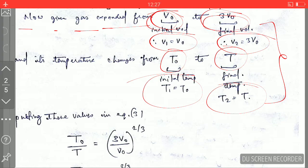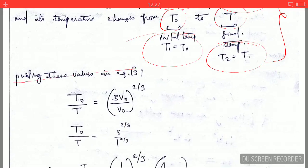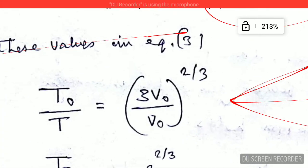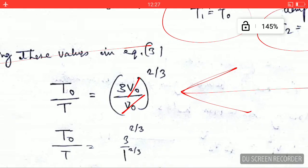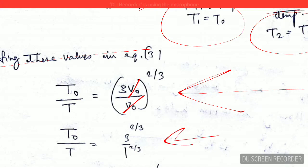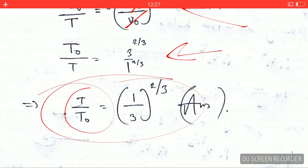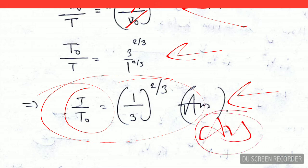After substituting the values, V₀ cancels from both sides and the equation simplifies. Rearranging gives us the ratio T over T₀, which is our final answer. Thanks for watching — if you liked this video please share with your friends, like and subscribe.